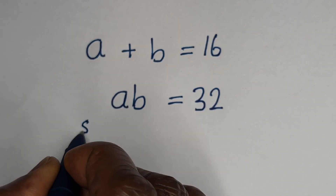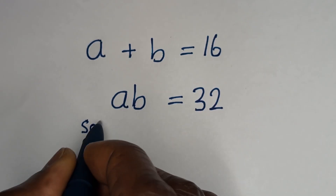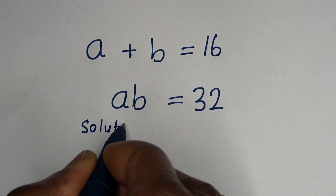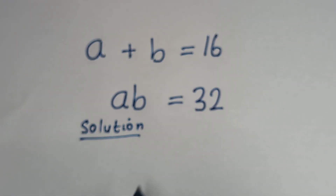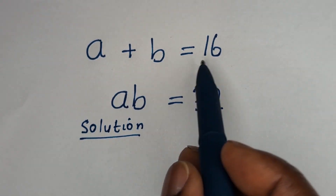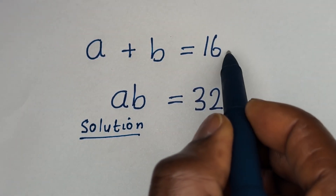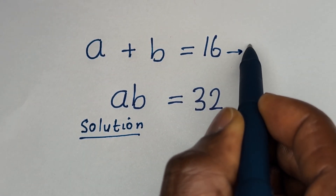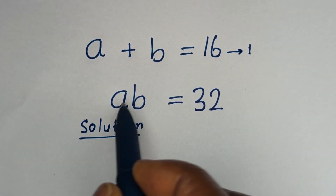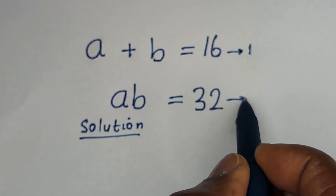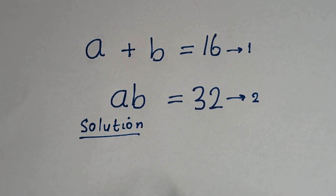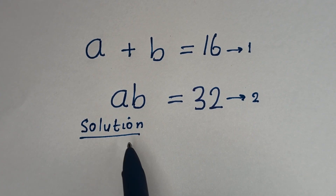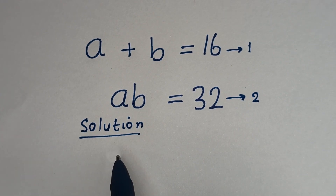Solution. A plus B is equal to 16 — let us call this equation 1. AB is equal to 32 — let us call this equation 2. Now we are going to solve this problem in different ways, but I'm going to use this method.